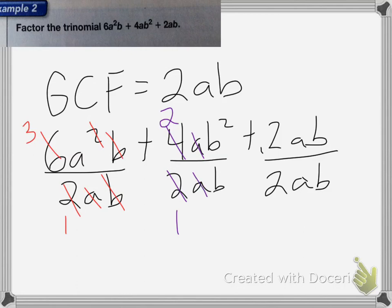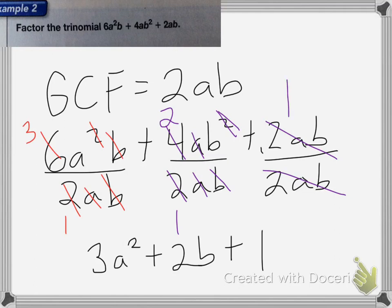The a and the a cancel, and then the 1 of the b's and this b cancel. And then this one, 2ab and 2ab cancel. So I'm left with 3a squared plus 2b plus 1, because the 2ab, 2ab still cancels and still is equal to 1.